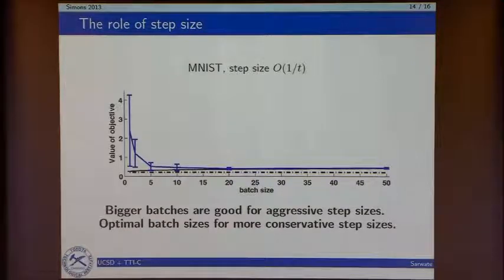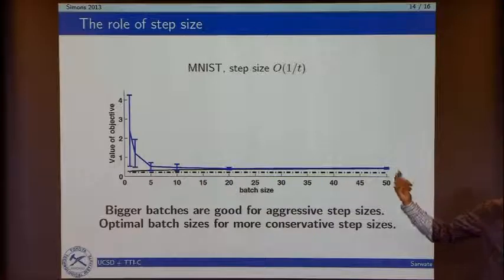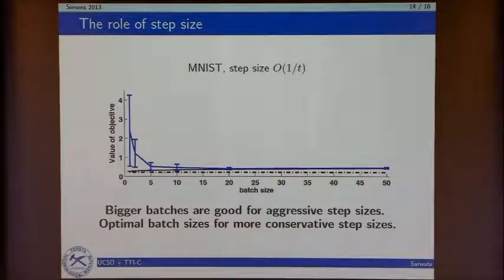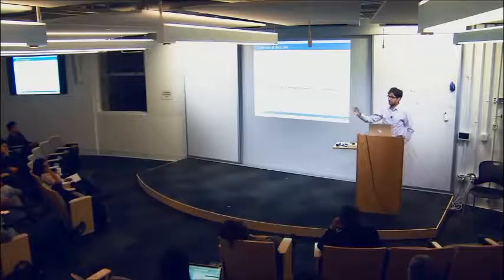You could try adapting the step size and having the batch size change over time as well. We didn't try that, but it's another thing you could do — there are a lot of knobs. That might have very good empirical performance; you'd essentially tune the noise to the step size. Those first steps where you're traveling far, you'd want to be more accurate, and then just wiggle around with small step size at the end.